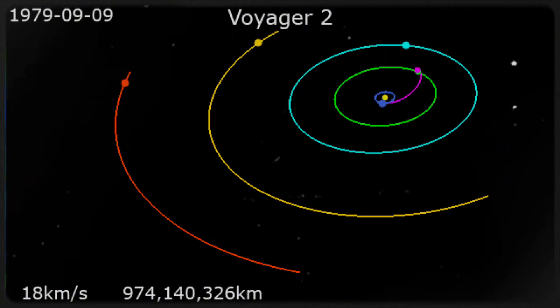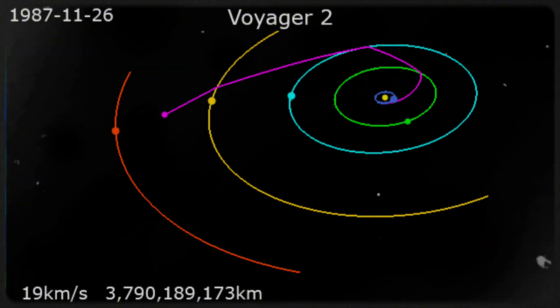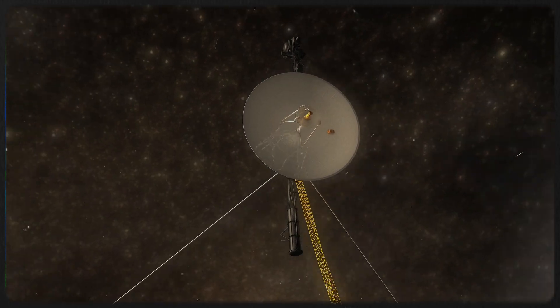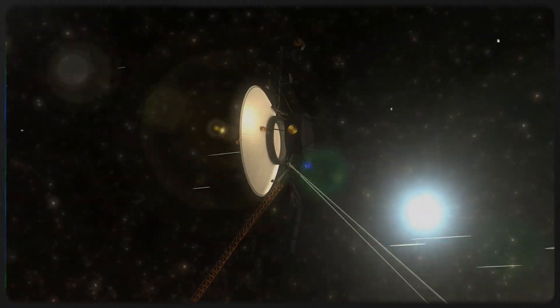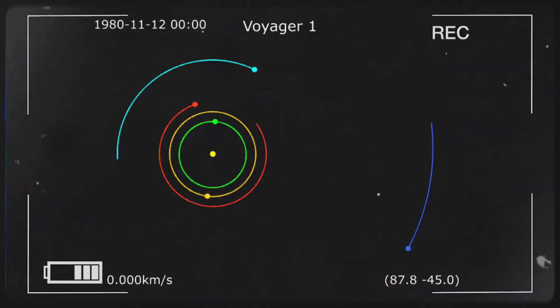The first probe to embark on a journey beyond our planet was Voyager 2, which launched into the vastness of space on August 20, 1977. Its mission was to explore the largely uncharted regions of our outer planetary system, paving the way for groundbreaking discoveries that would reshape our understanding of the cosmos. Just 16 days later, Voyager 1 followed suit, taking a different trajectory into the unknown. At that pivotal moment in history, no one could have foreseen that this would mark the beginning of what would become the longest-running mission in the annals of modern space exploration.